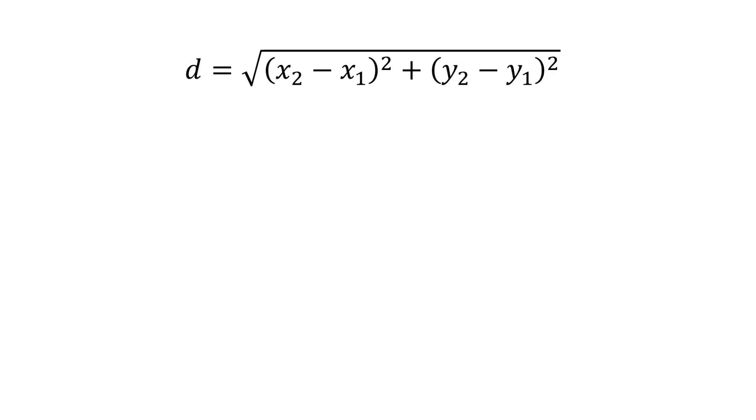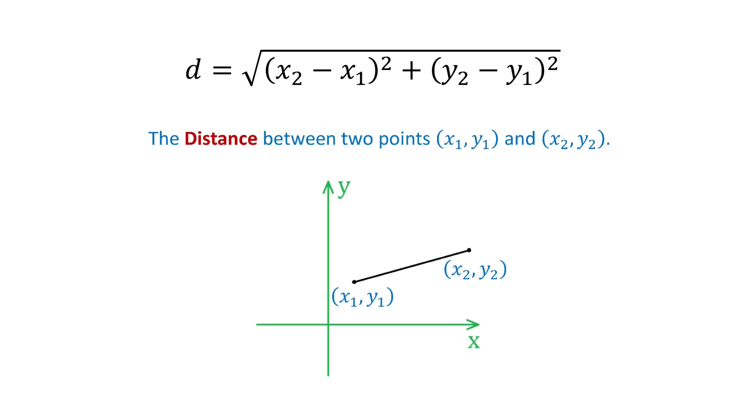Next, d equals square root of x2 minus x1 squared plus y2 minus y1 squared. This is the distance between two points x1, y1 and x2, y2.